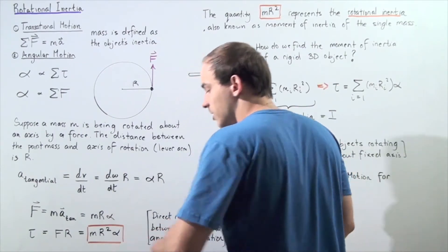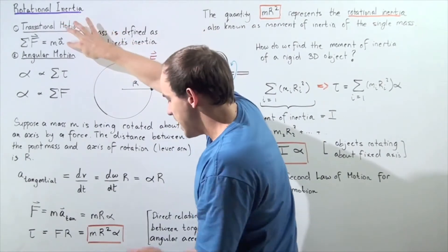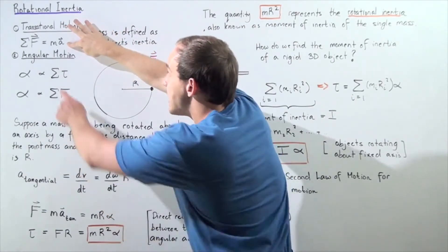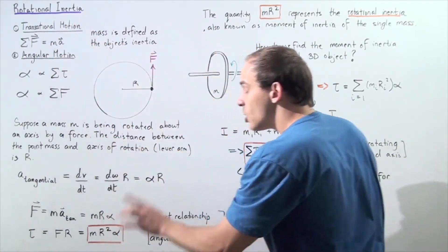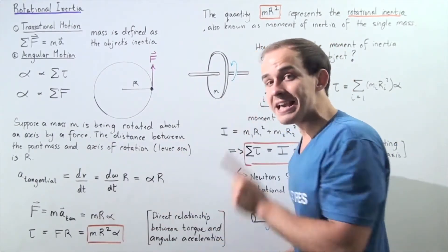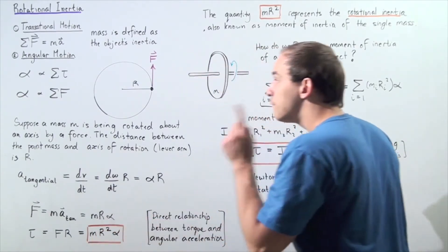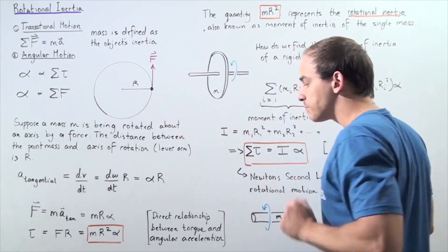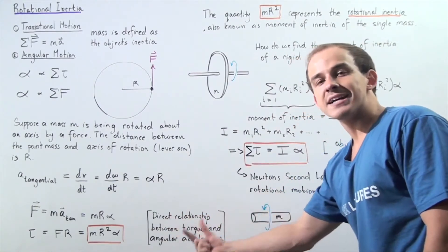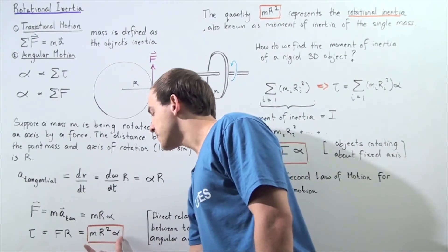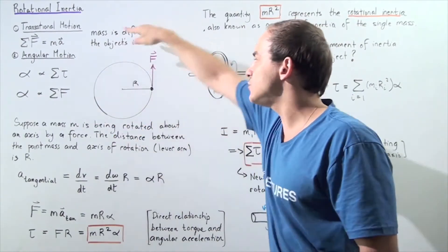Notice that here we have the linear acceleration, and here we have the angular acceleration. The mass M is the translational inertia of the object, but when dealing with angular or rotational motion, the inertia is given by M times R squared for a point particle of mass M. This gives a direct relationship between torque and angular acceleration — τ = MR²·α — which is analogous to F = ma for a point particle undergoing rotational motion.